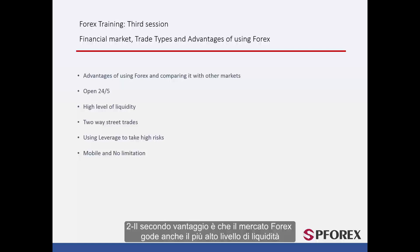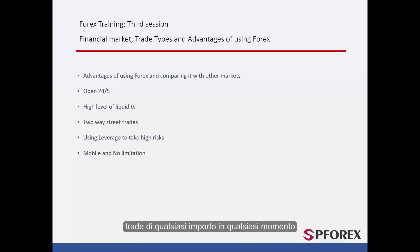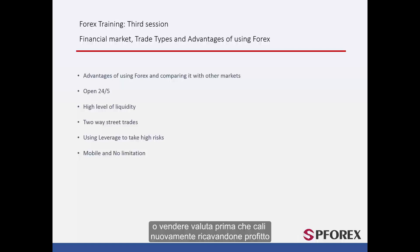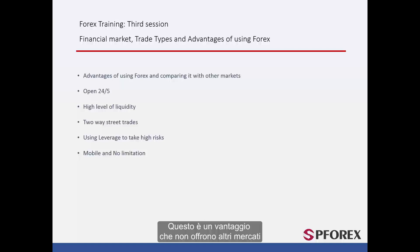The second benefit is that the Forex market also enjoys the highest level of liquidity. There are always buyers and sellers in this market who make trades of any amount at any time. Trades are made in two ways in Forex: traders can buy currency before its value rises, thus making profit, or sell currency before it drops, again deriving profit. This is an advantage that other markets do not offer, and therefore there are many opportunities to make profit.